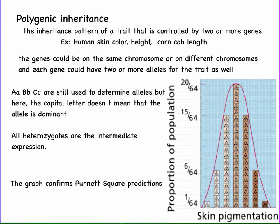Let's talk about polygenic inheritance — the idea that the inheritance pattern of a trait can be controlled by two or more genes, which may or may not be on the same chromosome. These genes can also have two or more alleles for the same trait, designated as capital A, little a, capital B, little b, capital C, little c. The capital letter doesn't exactly mean dominant here. Almost all heterozygotes have an intermediate expression rather than a true expression of one or the other. Looking at a graph of skin pigmentation, it actually confirms the law of segregation.